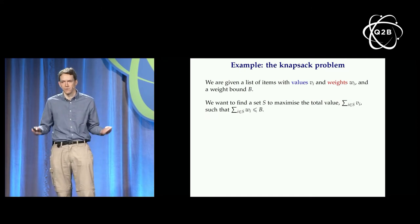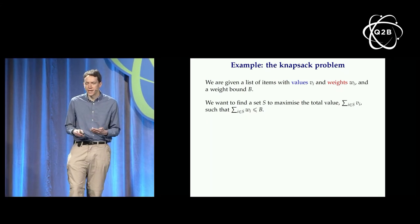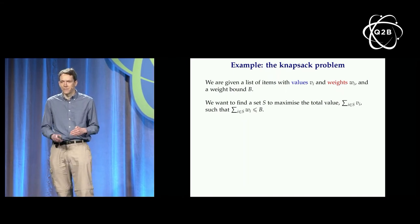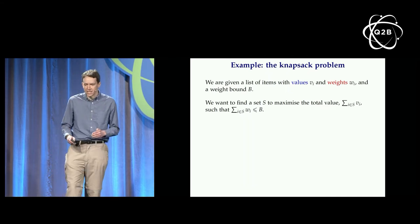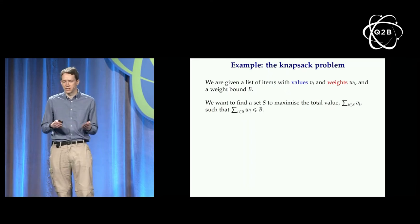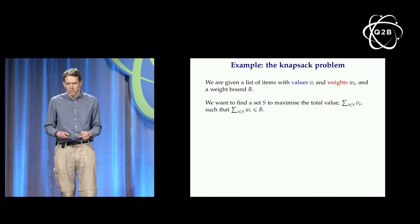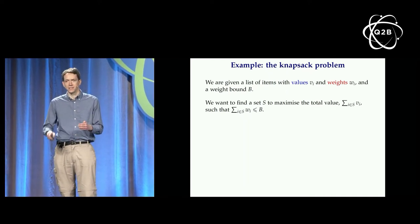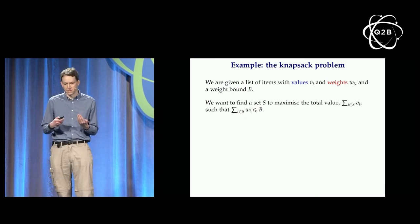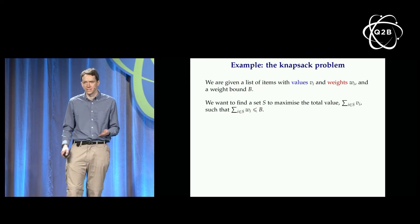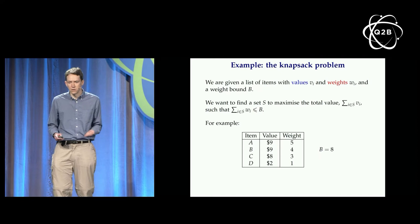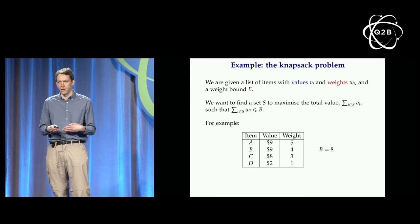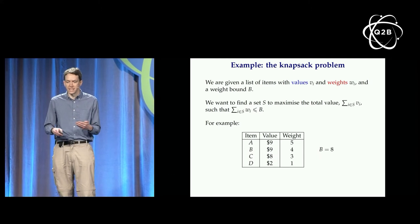The example is the knapsack problem. We're given a list of items with values V_i and weights W_i, and an overall weight bound B — the size of our knapsack. We want to find a set of items that maximizes the total value such that the total weight fits within B. This models a lot of interesting constraint satisfaction problems. However, this problem is NP-complete, so we think there's no efficient polynomial-time algorithm — the best algorithms are exponential in the number of items.